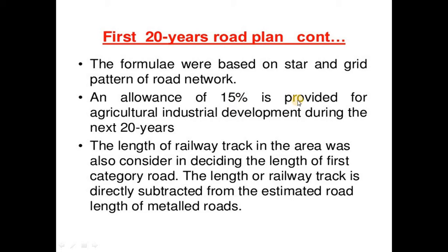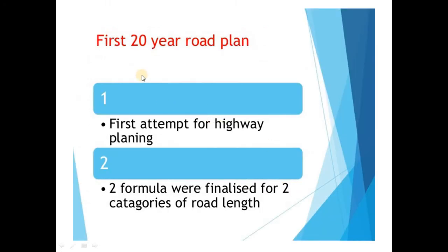An allowance of 15% was provided for agricultural and industrial development during the next 20 years. The length of railway track in an area was also considered in deciding the road length — the railway track length was directly subtracted from the estimated road length of metal roads. The first 20-year road plan's highway planning formula was: road fund = 2k × south road length.